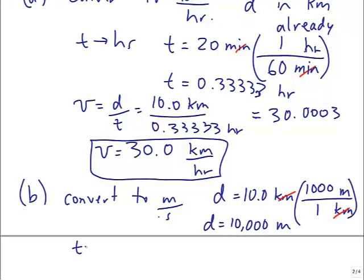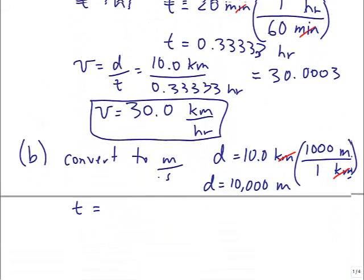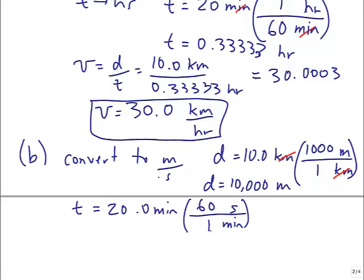And then time, I want in seconds, and remember time, what was it? It was 20 minutes, so 20.0 minutes. Multiply it by a conversion factor to get to seconds. I'll put minutes on the bottom. There are 60 seconds in one minute. This way we cancel minutes, cancels minutes. And so 20 times 60 in my calculator, that's 1,200 seconds.